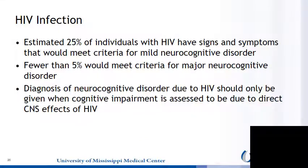An estimated 25% of individuals with HIV have signs and symptoms that would meet criteria for mild neurocognitive disorder, while fewer than 5% would meet criteria for major neurocognitive disorder. A diagnosis of neurocognitive disorder due to HIV should only be given when cognitive impairment is assessed to be due to direct CNS effects of HIV.